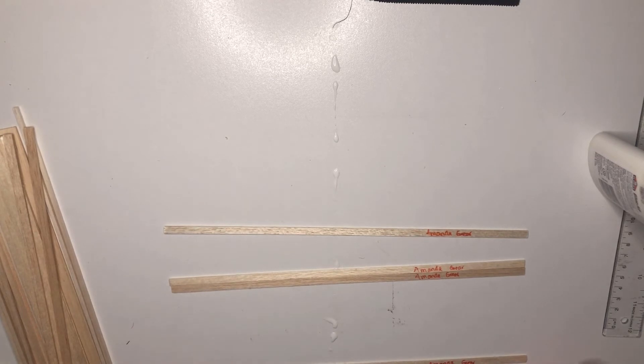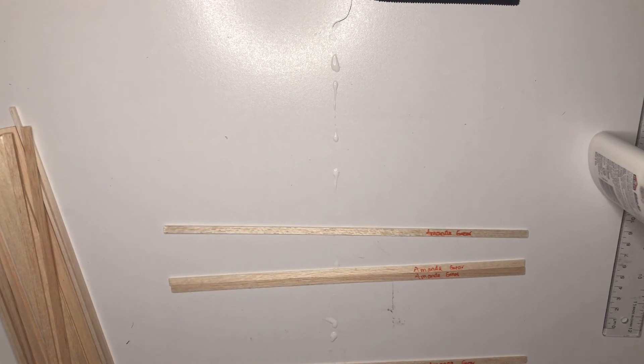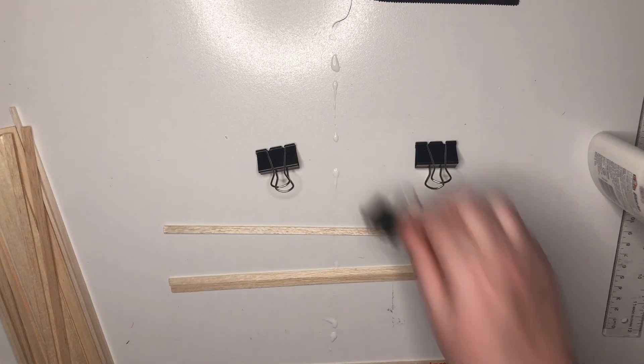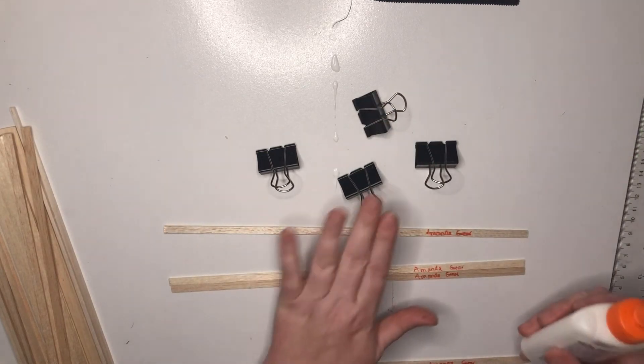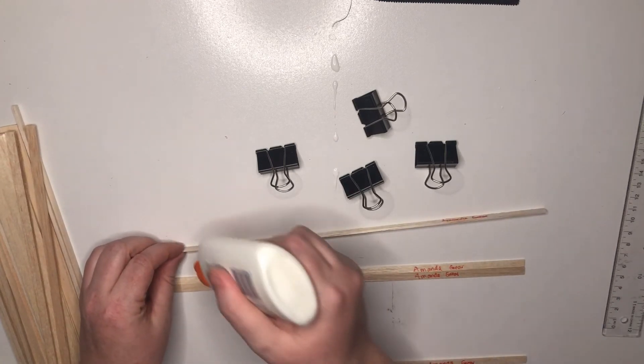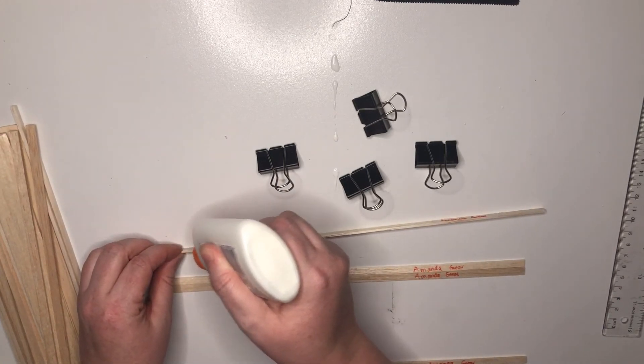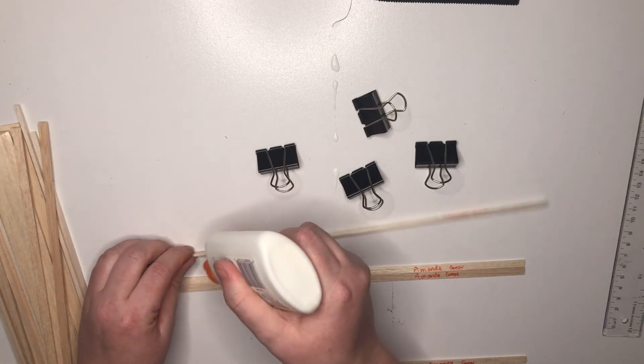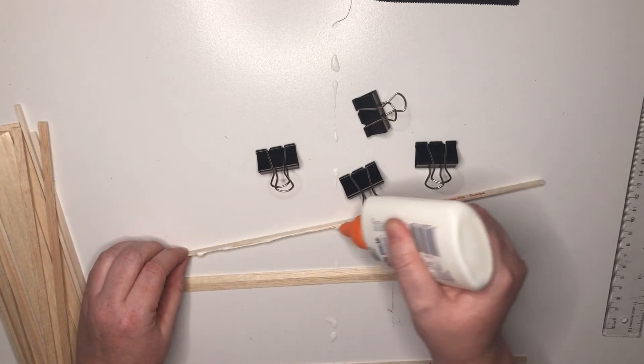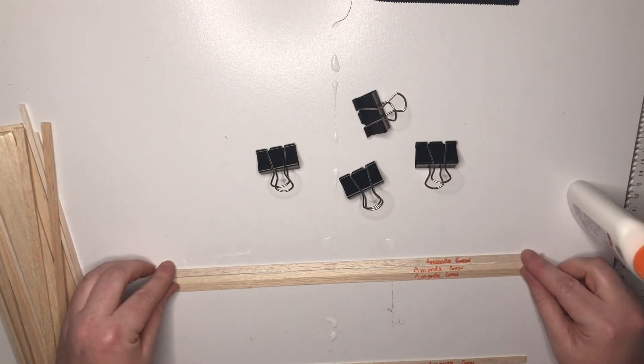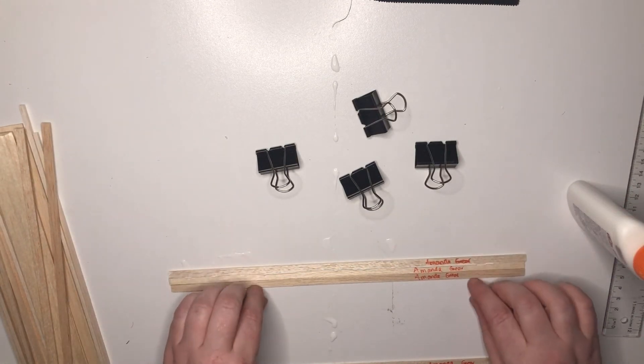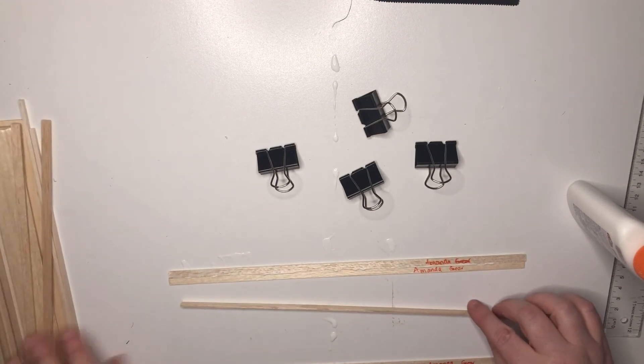This is your video on how to make flat beams. You're going to want to get some of these binder clips—you're going to need two per beam. These are the medium-sized ones. For the flat beam, you're going to put glue along the very skinny edge of your beam. It's a little tricky.